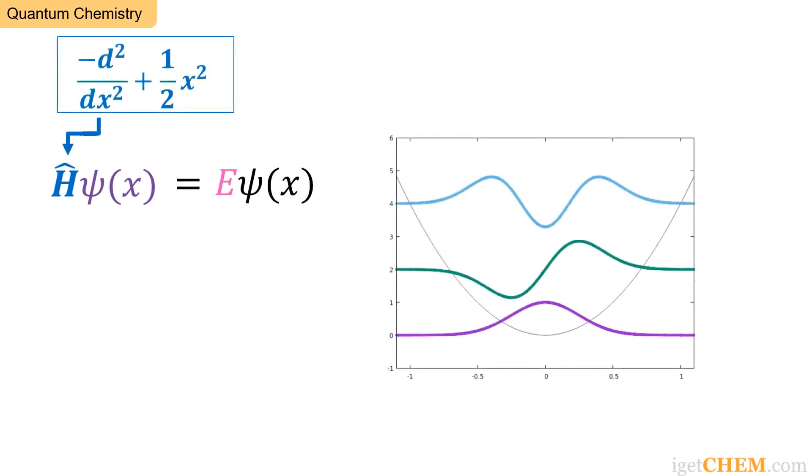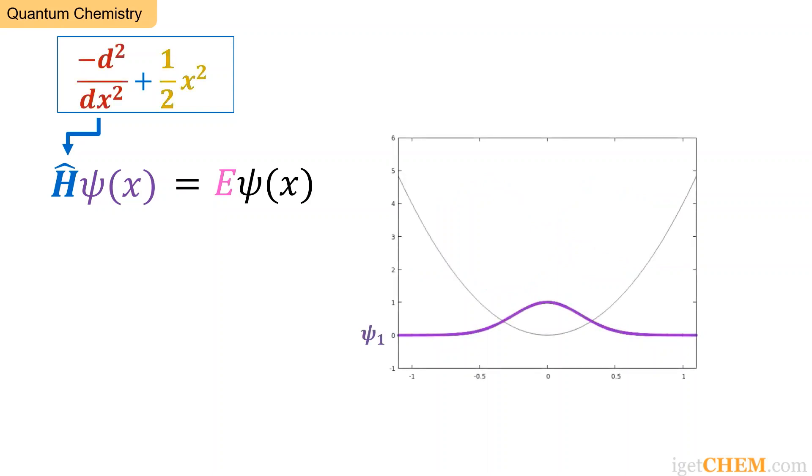Let's look at another example. This operator H equals negative d squared dx squared plus one half x squared is also Hermitian. The graph shows the first three eigenfunctions of this H. There are actually an infinite set of eigenfunctions for this operator. To illustrate that these are eigenfunctions, we can take the first one psi 1 and calculate one half x squared times psi 1. This is shown in yellow.